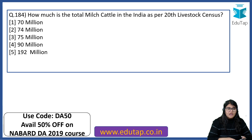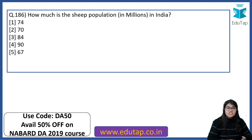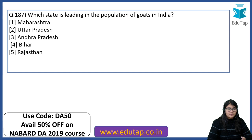How much is the total milk cattle in India as per the 20th Livestock Census? The correct answer is 74 million. Which is the leading state in buffalo population in India? The right answer is Uttar Pradesh. How much is the sheep population in India in millions? The right answer is 74 million. Which state is leading in the population of goats in India? The right answer is Rajasthan.